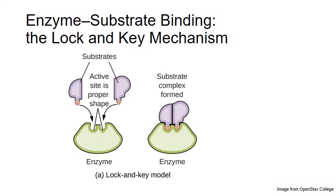After the reaction occurs, the products are released from the active site, leaving the enzyme in its original form. Enzymes are extremely specific — they usually catalyze a single type of reaction — and they're also very efficient; they can speed up the rate of a biochemical reaction by a factor of a billion. The presence of enzymes gives organisms a great deal of control over which reactions occur in the body and when. To make a particular reaction occur, the organism can produce or activate the appropriate enzyme.